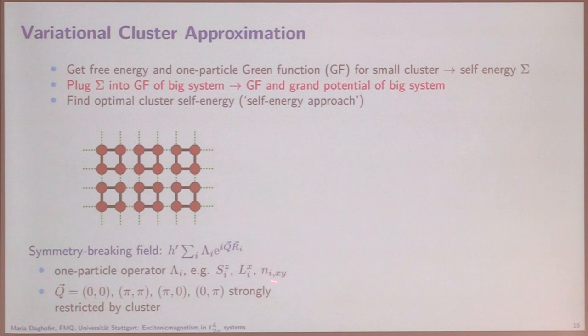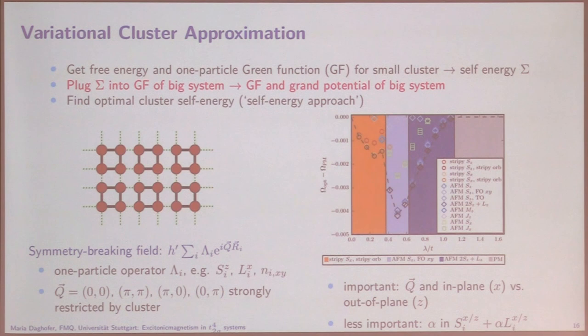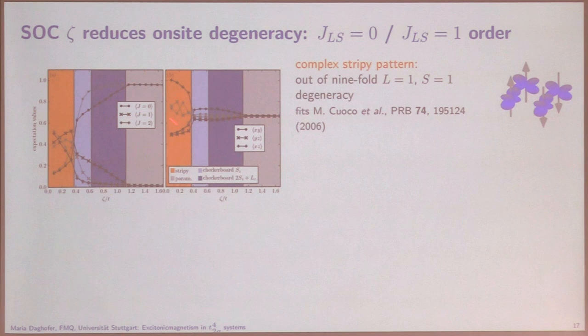For the model without crystal field splitting, the grand potential shows: a stripy order at small spin-orbit coupling, a checkerboard pattern at intermediate spin-orbit coupling, and when spin-orbit coupling wins, a paramagnet with no symmetry breaking. What we found is that it's really only the symmetry that is important, not exactly how we break the symmetry. We looked at this because we want to understand how excitonic magnetism would appear in this method.